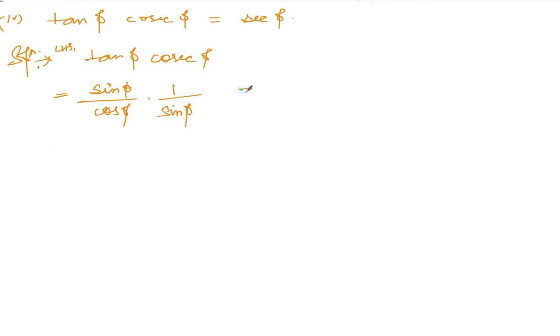Now sine phi sine phi cancel. It is one by cos phi. One by cos phi, one by cos, it is sec, right? So sec of phi, so sec of phi is equal to right-hand side.